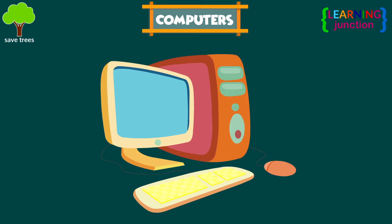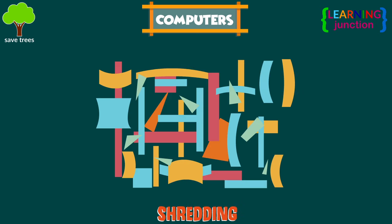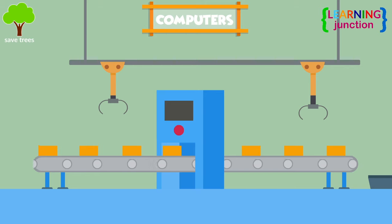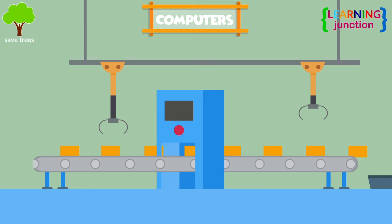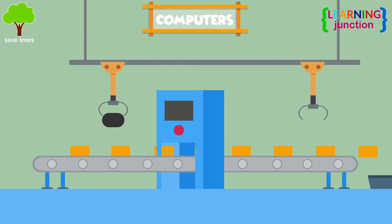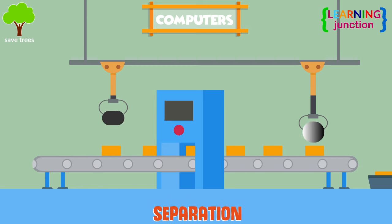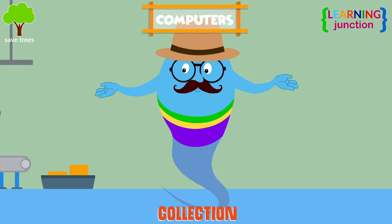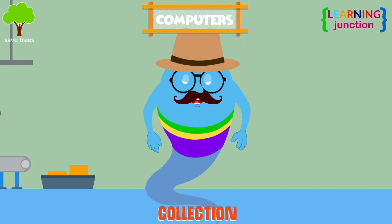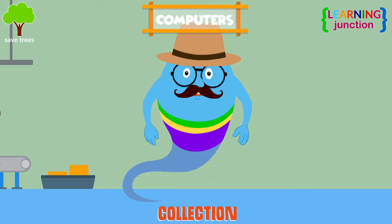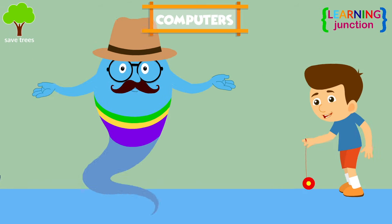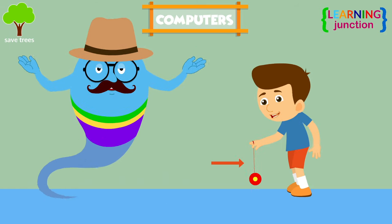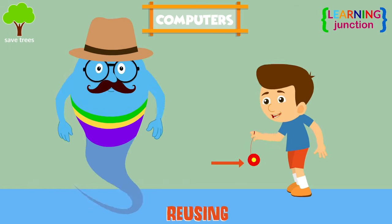Computers. The old computers are shredded first. Then conveyor belts transfer this under a powerful magnet, which separates iron and steel from the e-waste. The steel and iron are collected in bags for later use. The remaining e-waste stream is mostly plastic, which is also reused in various ways.